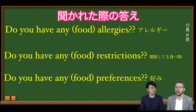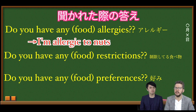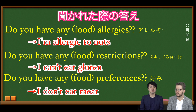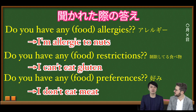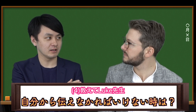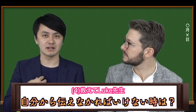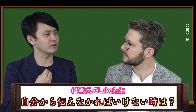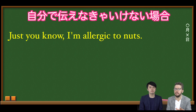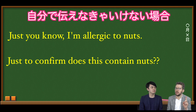Some answers to these questions might include: 'I'm allergic to nuts,' 'I can't eat gluten,' or 'I don't eat meat.' If you want to bring up your allergy proactively, you can say, 'Just so you know, I'm allergic to nuts.' Or, if you've already received something and want to check, you can say, 'Just to confirm, does this contain nuts?'